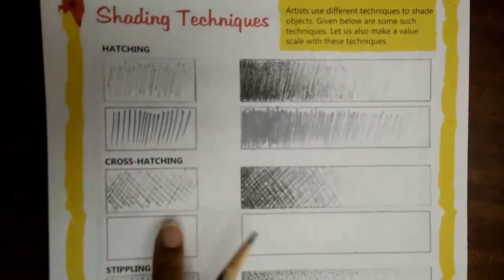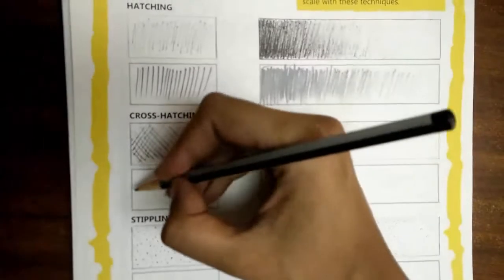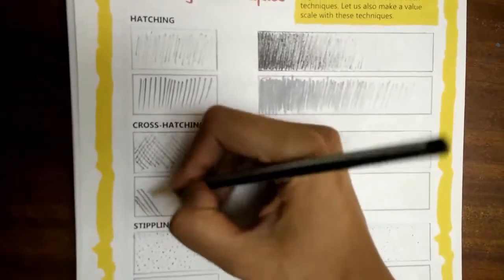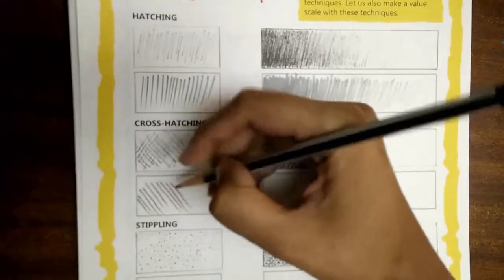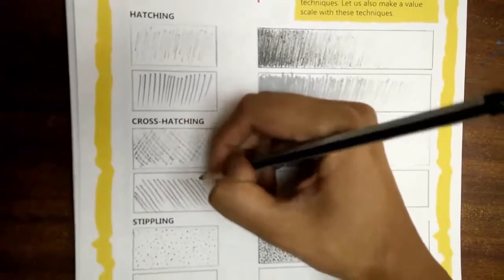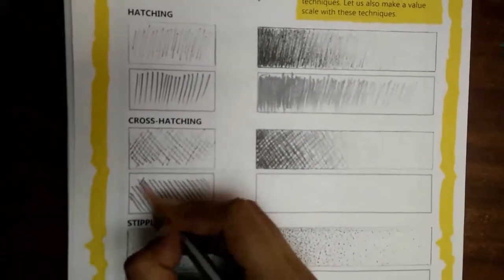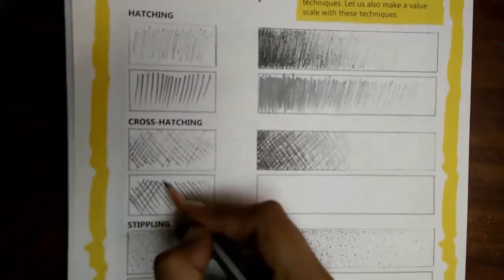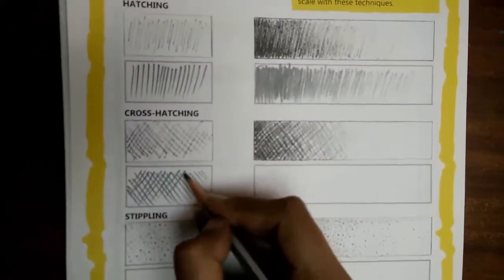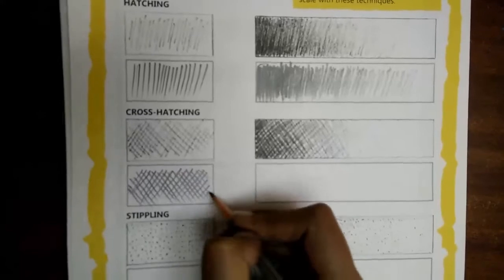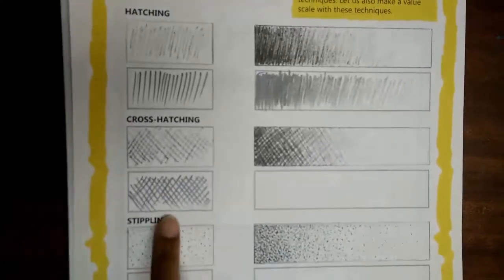Next, we have the cross hatching technique. In this technique, we first make the lines in one direction. And then we make the lines in the opposite direction. In this way, we get a cross hatch.